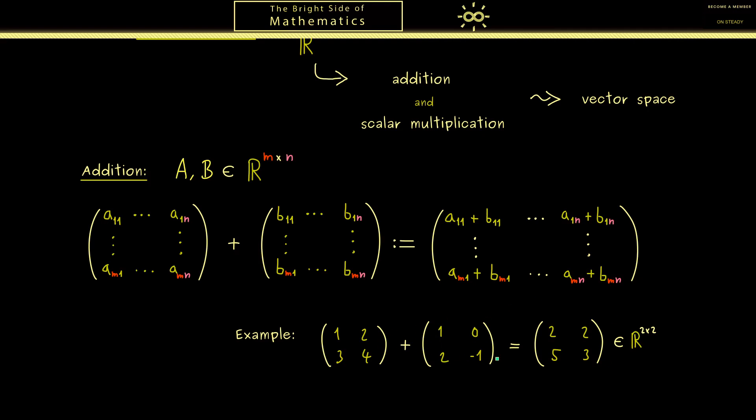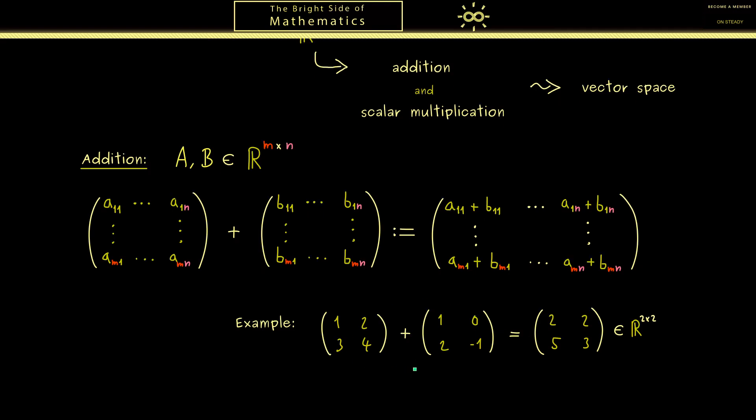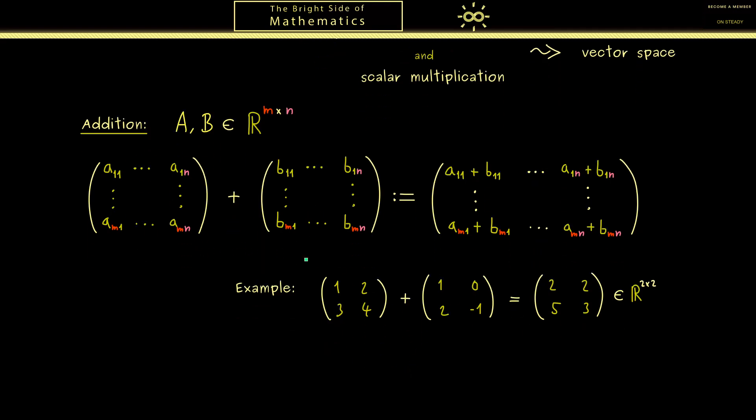So you see this is a well-defined operation, the addition of matrices. However, this operation is not defined if the shape of the matrices is different. So for example, if you take a 2 times 3 matrix like this, so we have 6 entries, and maybe we choose them as 1, 2, 3, 4, 5, 6, then it's not possible to add a 2 times 2 matrix like 7, 8, 9, 10. So please keep that in mind, this is something we cannot do.